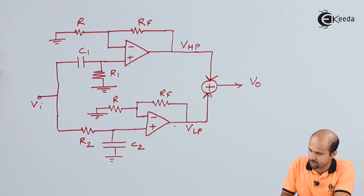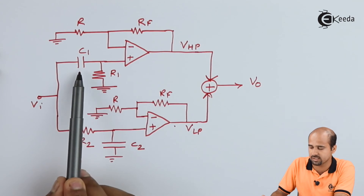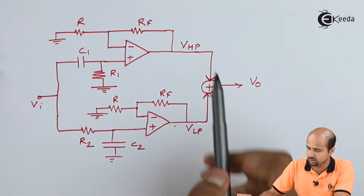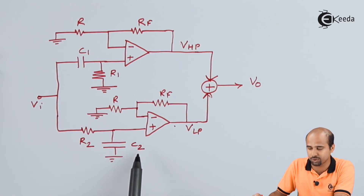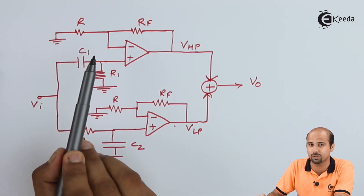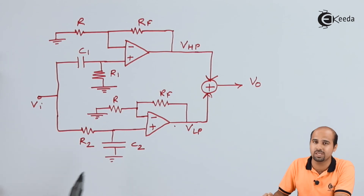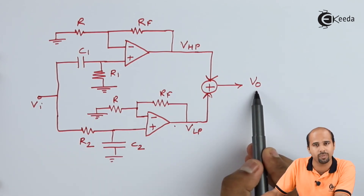This is the realization of the band stop filter using a high pass filter and a low pass filter. The upper circuit is the high pass filter, where the capacitor is in series with the input at the inverting terminal. The lower portion is the low pass filter configuration. Make sure that RF and R for the high pass filter have the same values as RF and R for the low pass filter, so that both have the same maximum gain — giving a constant gain level before and after the notch at the band stop filter output.